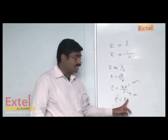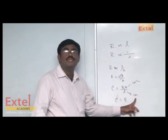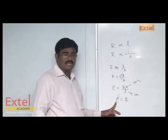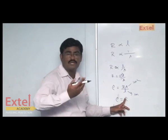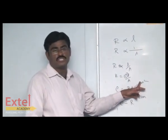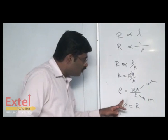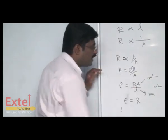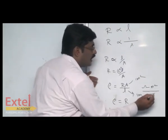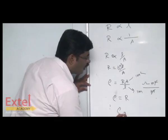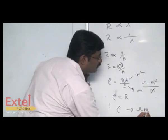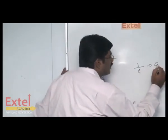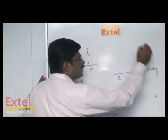Specifically, it is numerically equal to the resistance of a conductor having unit area of cross section and unit length. Now, what is the unit? Resistance has a unit of ohm, area has units of m squared, and length has units of meter. Canceling out, the electrical resistivity rho has units of ohm meter.